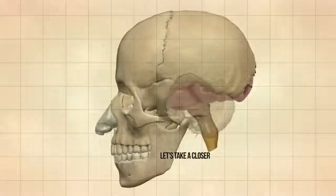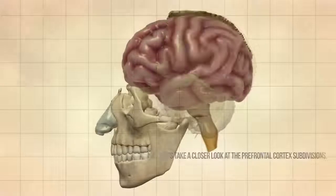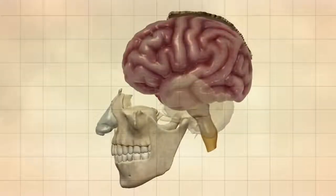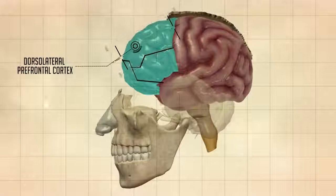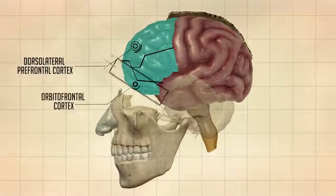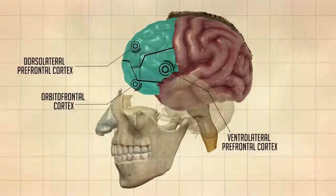Let's take a closer look at the prefrontal cortex subdivisions. This area of the brain has been divided into three main subdivisions, known as the dorsolateral prefrontal cortex, orbitofrontal cortex, and the ventrolateral prefrontal cortex.